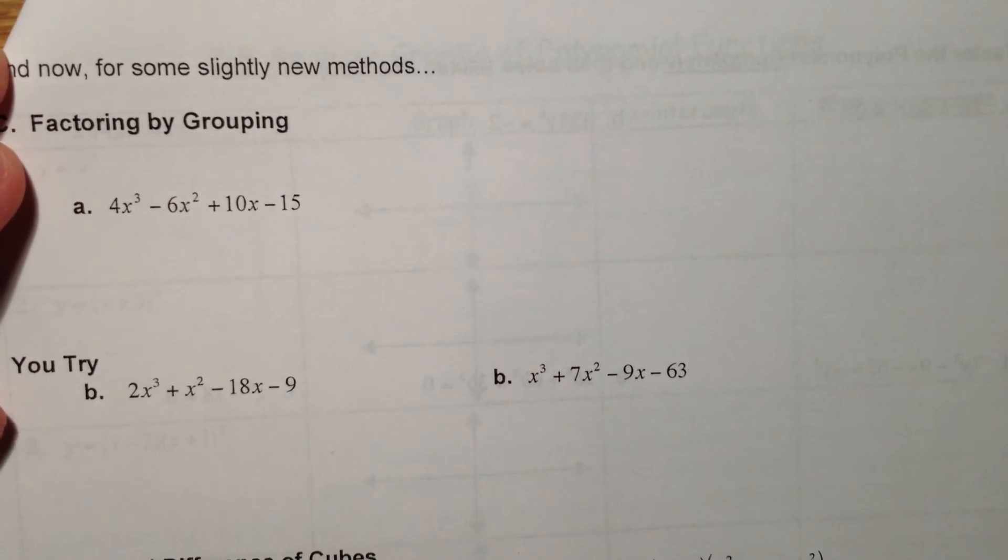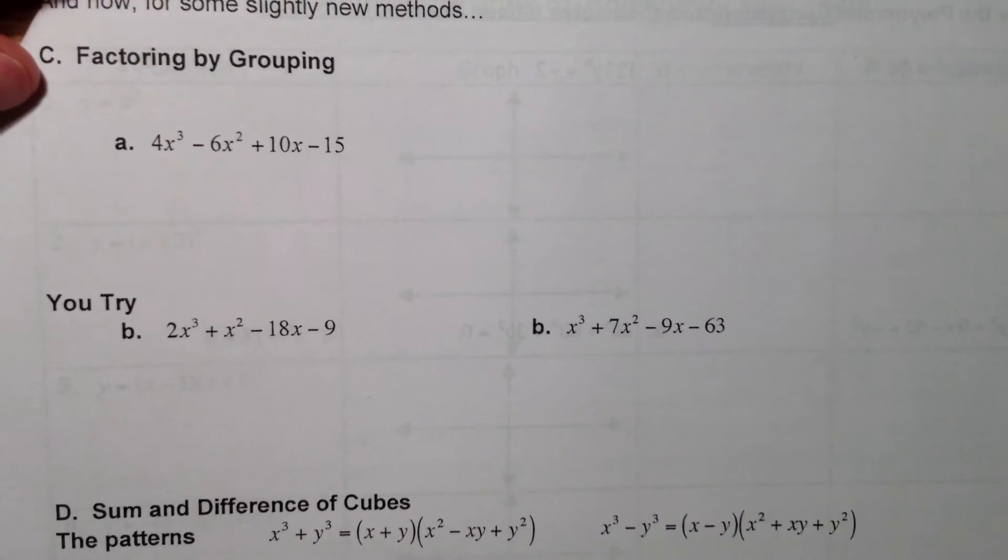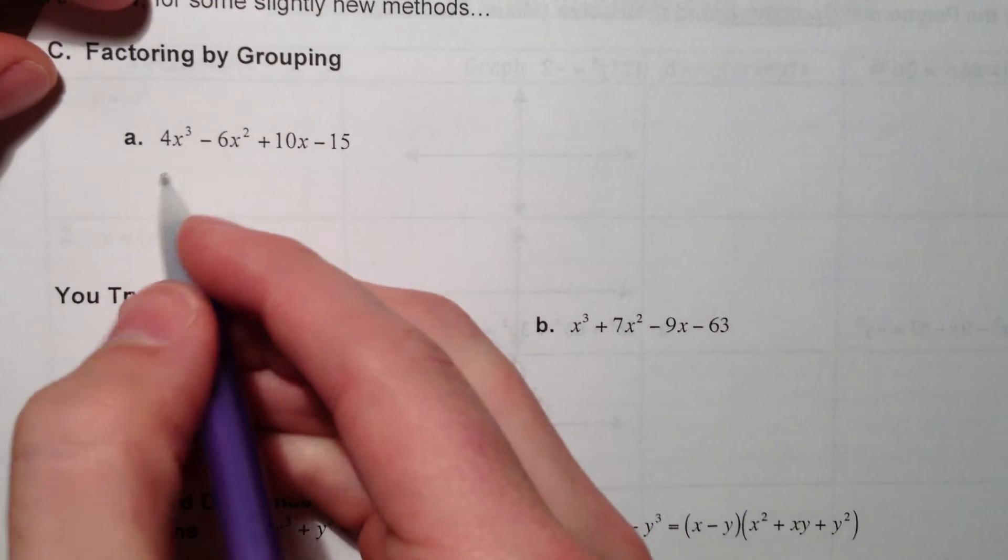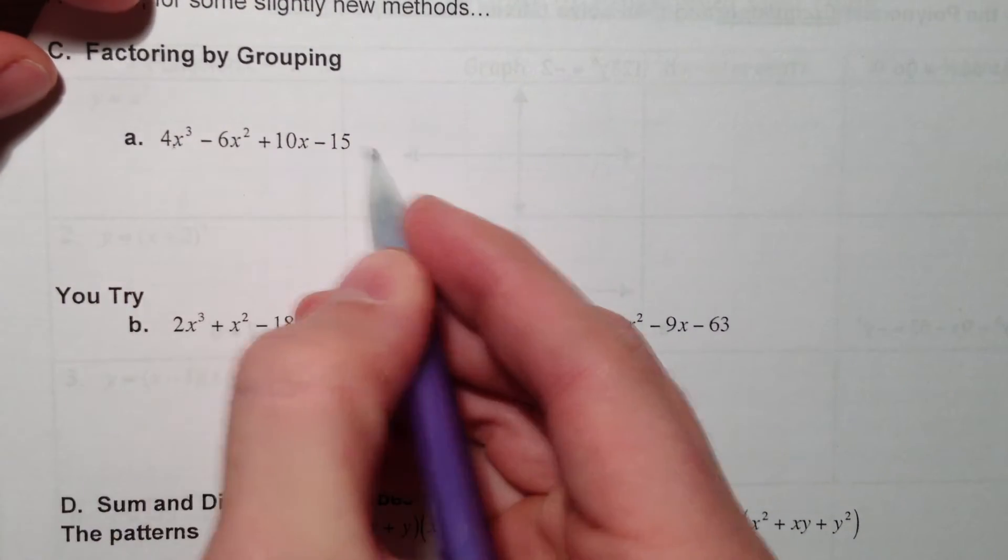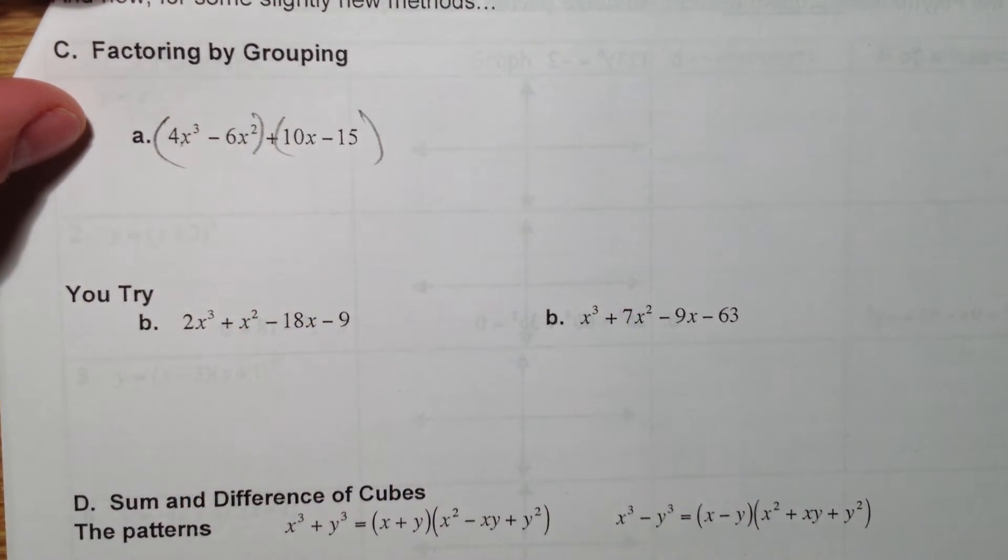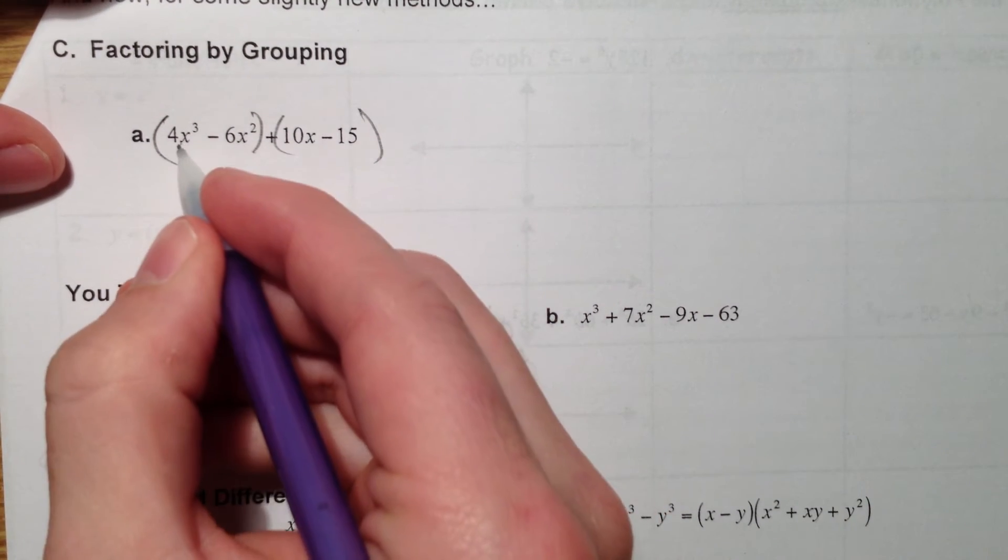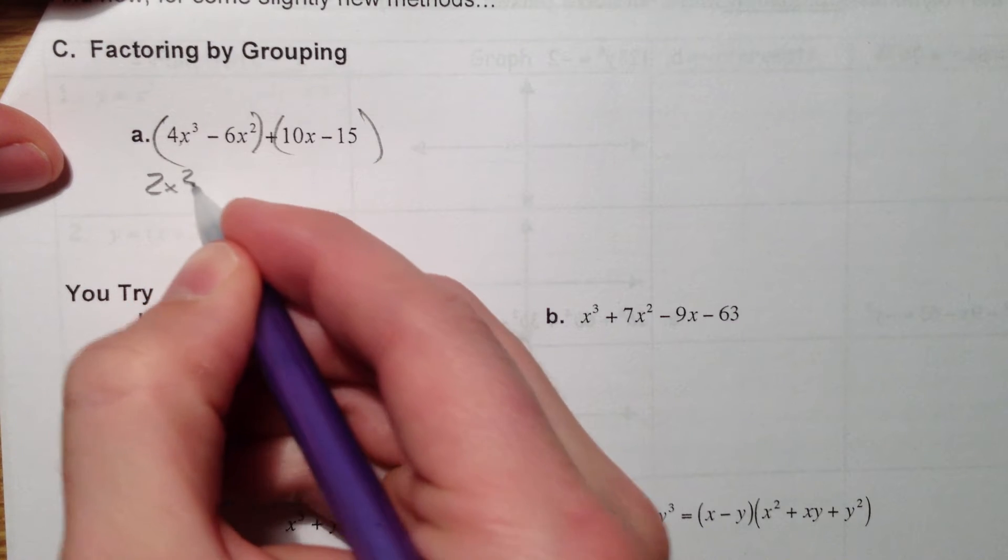So now on to some new methods where we don't quite have... So if you had x³ and we have 4 terms. Anytime you have 4 terms, try factoring by grouping.